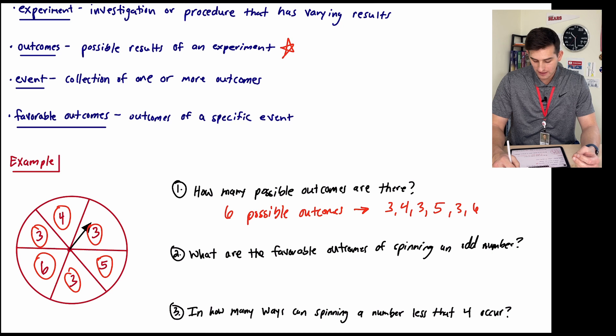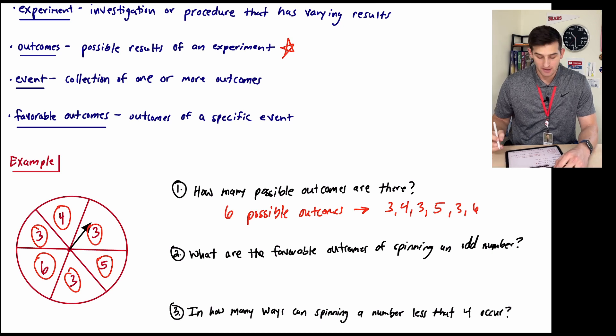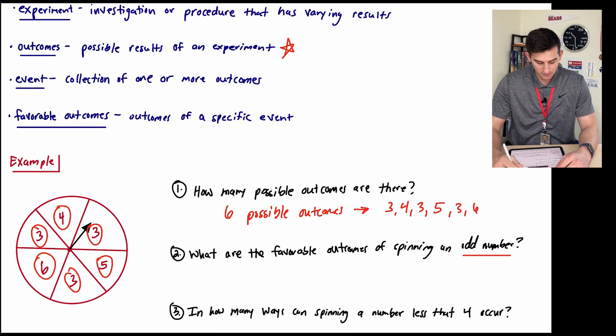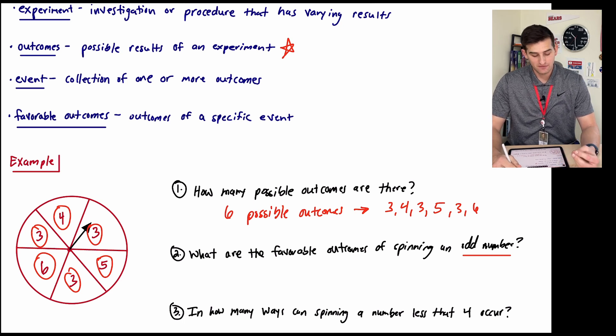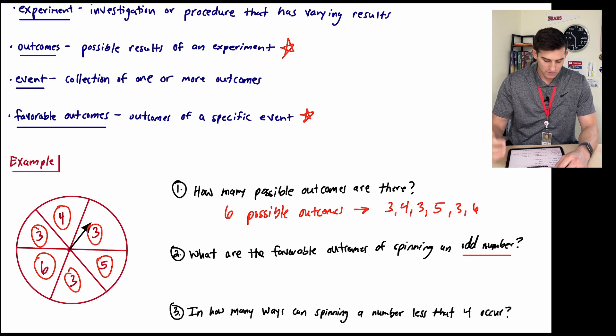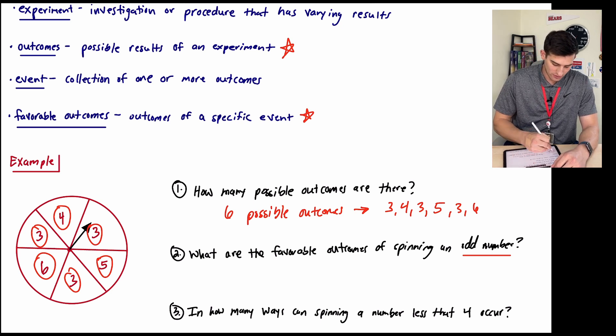Now number two says, what are the favorable outcomes of spinning on an odd number? So this is our favorable outcome, which is our specific event. If we look back at our definition of a favorable outcome, it says outcomes of a specific event. So now let's go back and look at our numbers here.